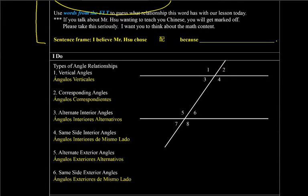And today's lesson should not be super long. It should be pretty quick. Nuestra elección hoy debe ser más rápido. So, different types of angles. Ángulos diferentes. Tipos de ángulos.